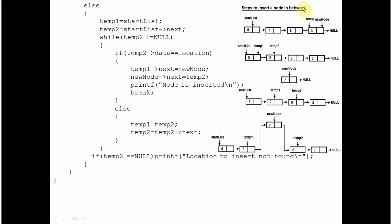What if the user wants to insert a new node in between the linked list? In that case, you will take the use of two pointers temp1 and temp2. Temp1 will follow temp2. So temp1 is set to point at start list and temp2 is set to point at the next member of start list. You will execute a loop to find where the user wants to insert before which node. You are checking if the data member is equal to the location. Suppose the user inserts 8 — we want to insert a new node before 8. We are checking if the data member of temp2 node is equal to 8. If not, both will move further: temp1 will come to temp2 and temp2 will move to its next node.